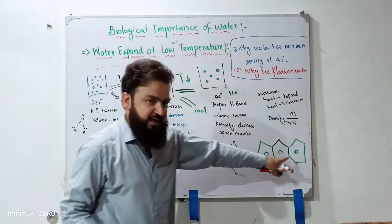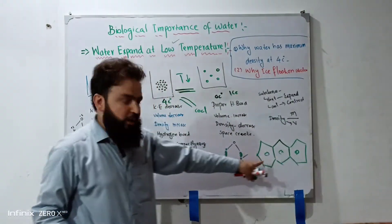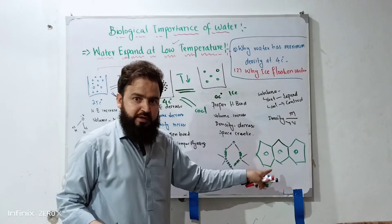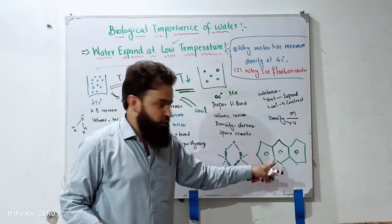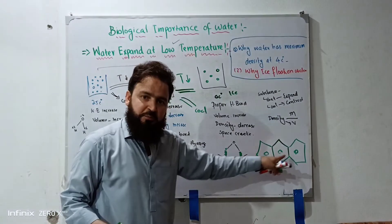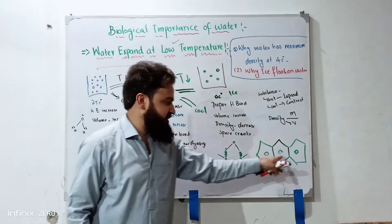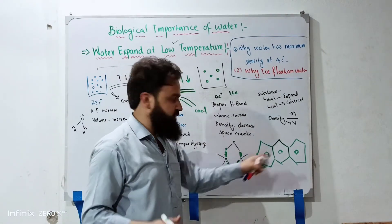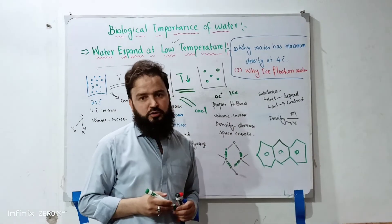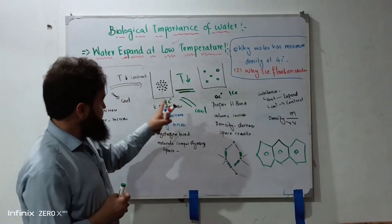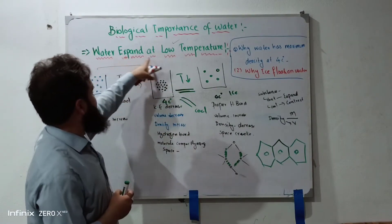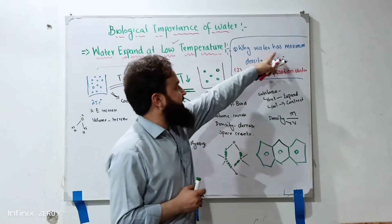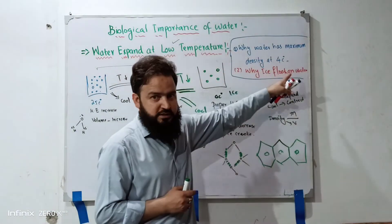The shape of the ice body is hexagonal. The water molecules form hydrogen bonds creating the same hexagonal arrangement. In ice, proper hydrogen bonds create space. The density of ice is less. Water expands at low temperature. Why does water have maximum density at 4 degrees centigrade?